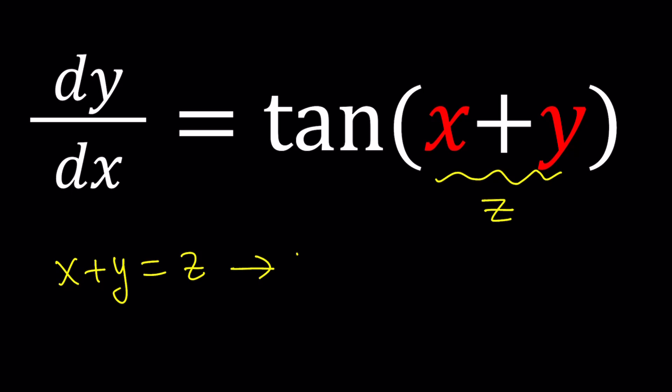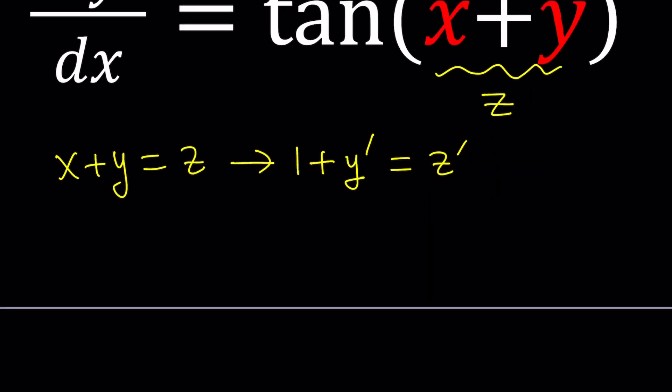The derivative of x is 1. The derivative of y is y prime. And this is z prime. Now by y prime and z prime I mean dy over dx and dz over dx. We could also write our equation that way. So basically this notation is more clear. But sometimes for brevity purposes we just avoid it.